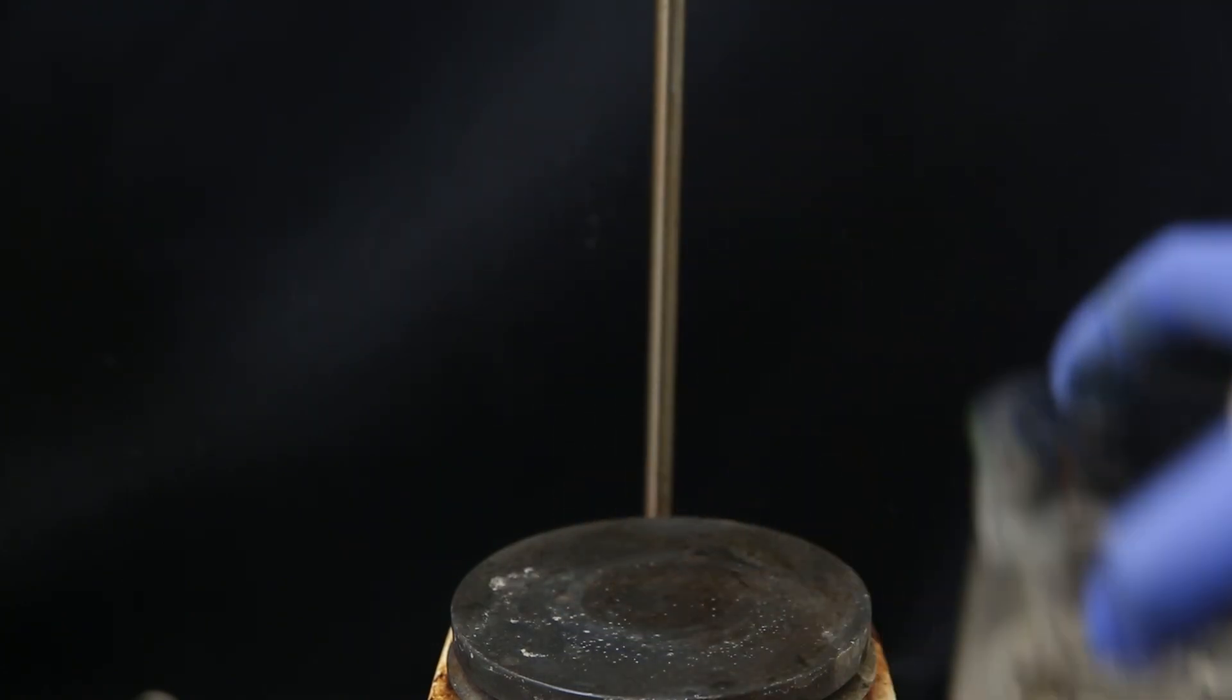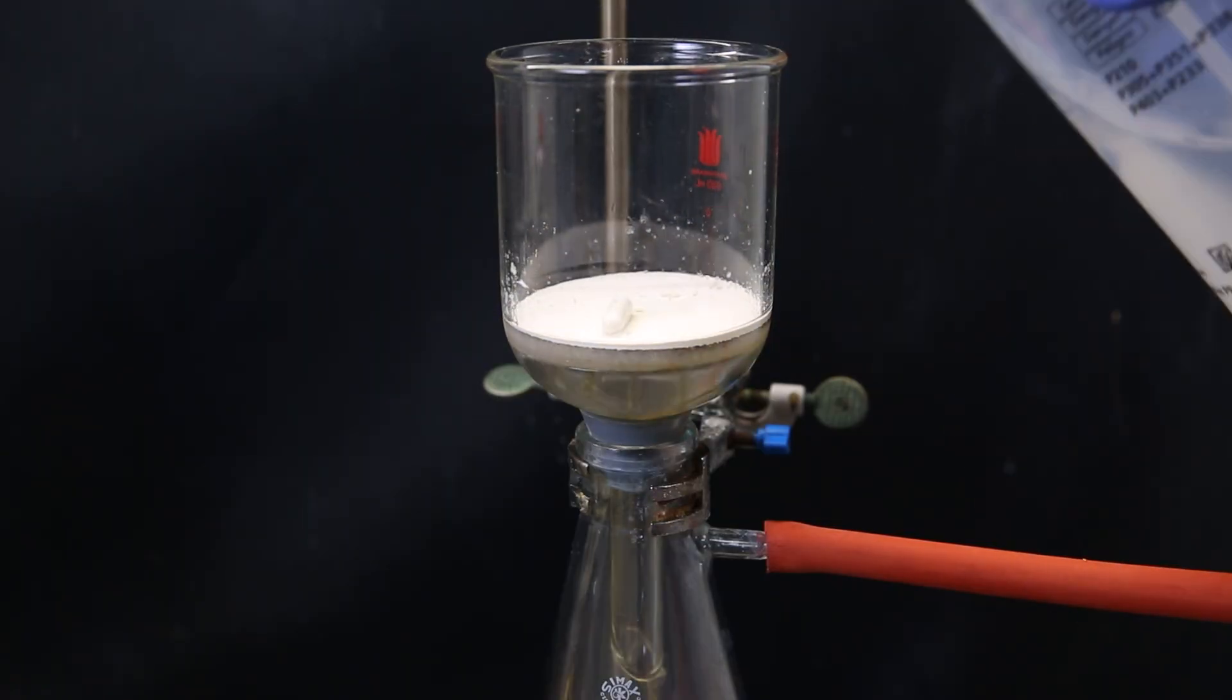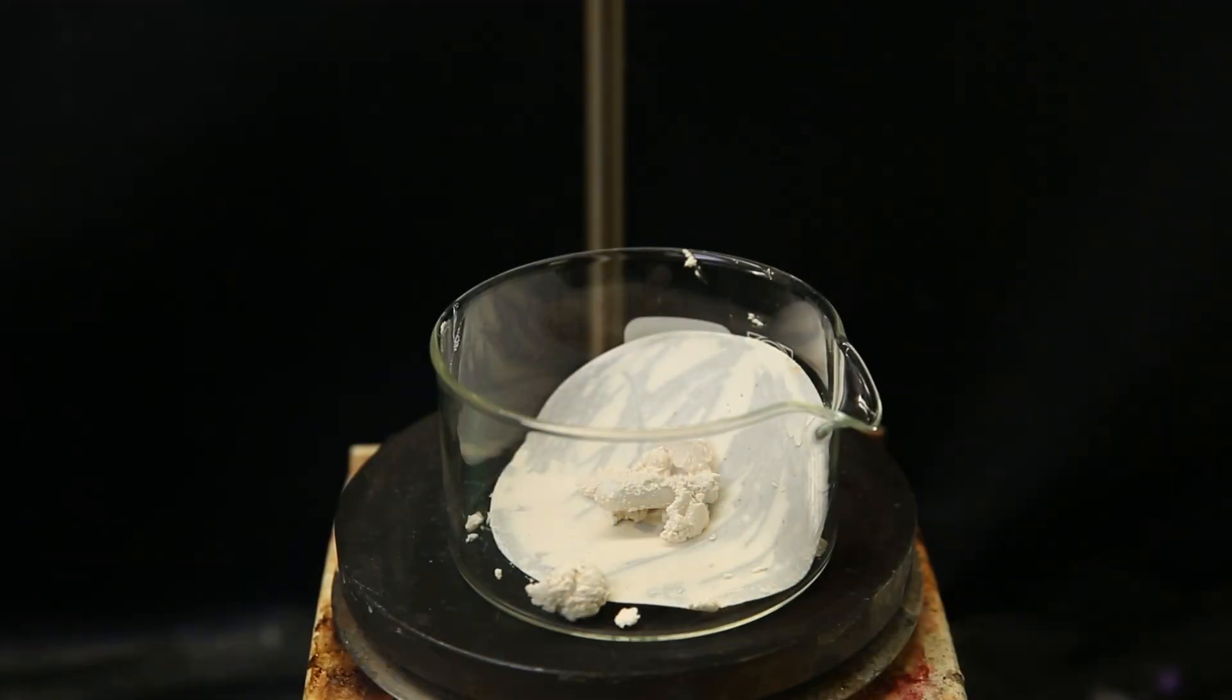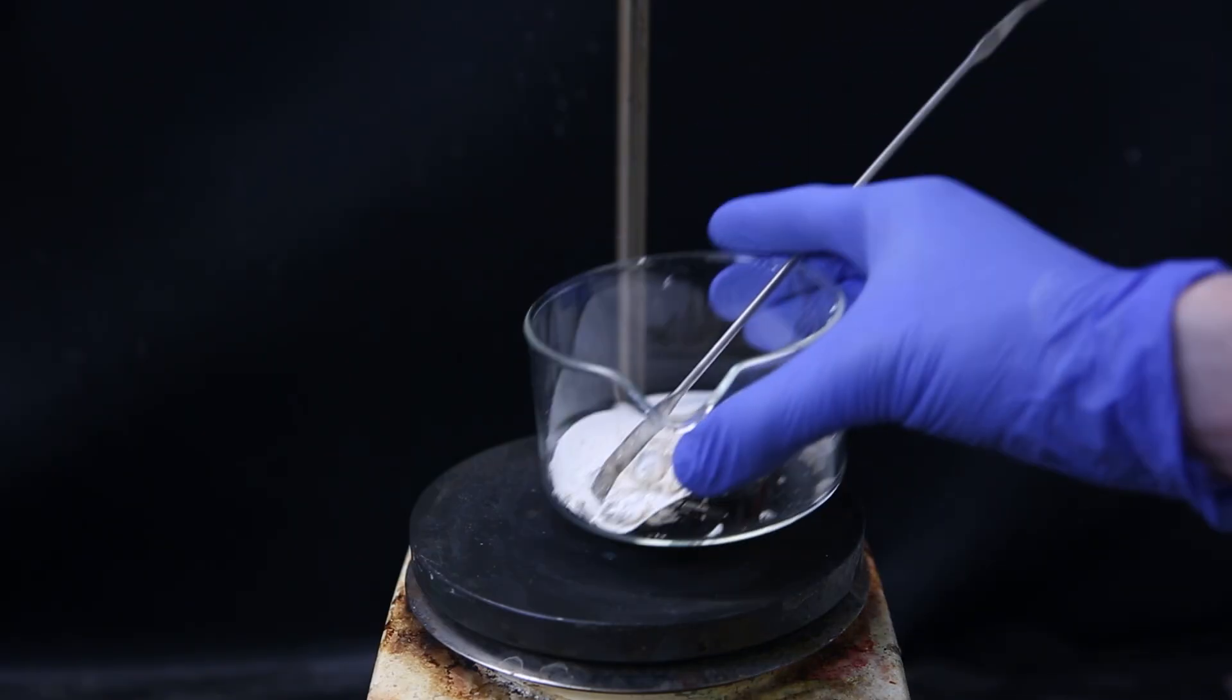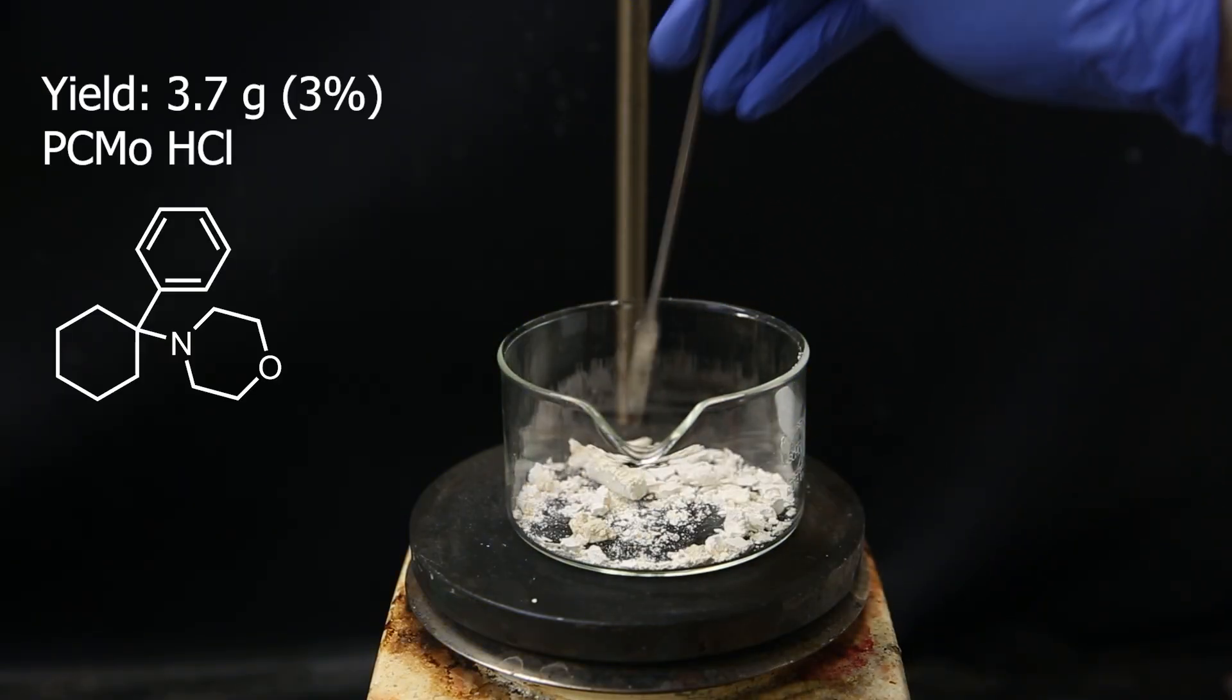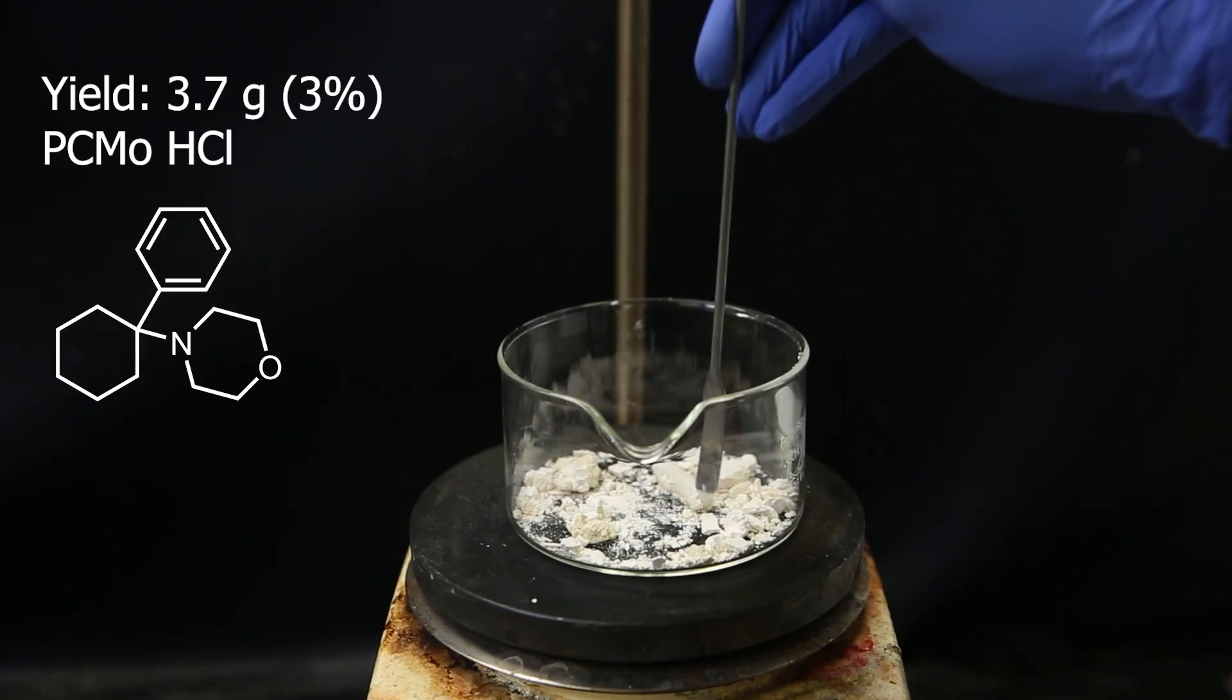I then set this up for vacuum filtration, and wash it with some more acetone, leaving behind the product as an almost white solid. I move all of the collected solid to this dish, and then set it in the oven at 50°C overnight, to remove remaining acetone. When that's done, it easily crumbles into a powder, giving a pathetic yield of 3.7 grams, or 3% of the PCMO hydrochloride.